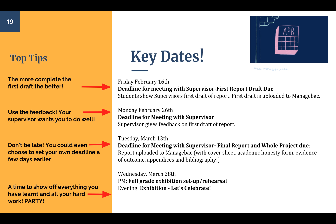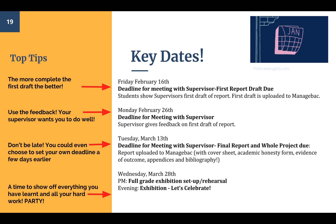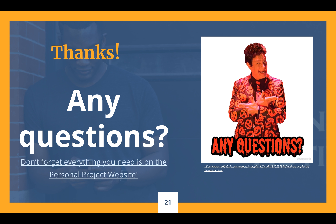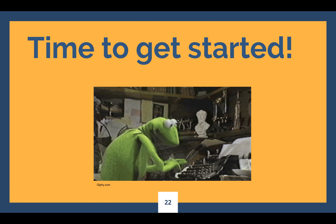Top tips: complete your first draft as fully as possible to get useful feedback — if you only submit Criterion A or bullet points, you won't get good feedback. Do it to the highest standard you can. Use the feedback your supervisor gives you, criterion by criterion. Don't be late — consider setting your own deadline a few days early. The exhibition on March 28th is a time to celebrate. Follow those requirements and top tips and you can't go wrong. We're going to spend the rest of the time working on our personal project reports.